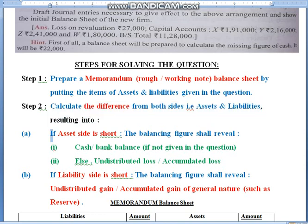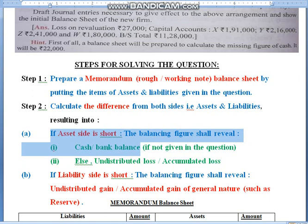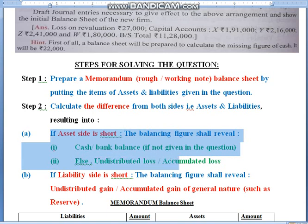If the asset side is short, first and foremost you will assume it to be the cash balance. Here it was instructed in the question that apart from cash, the firm had these assets. But many times it may be possible that such an instruction is not given. So if the asset side falls short and it is not given in the question, you will assume it to be the cash balance. But if a cash or bank balance is already given on the asset side, then you will treat the shortage as an undistributed or accumulated loss.